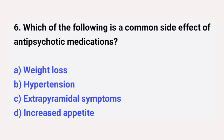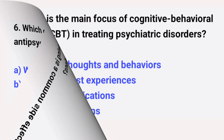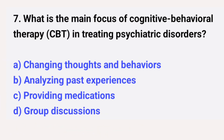Question number six: which of the following is a common side effect of antipsychotic medications? The right answer is option C: extrapyramidal symptoms. Question number seven: what is the main focus of cognitive behavioral therapy in treating psychiatric disorders? The right answer is option A: changing thoughts and behaviors.